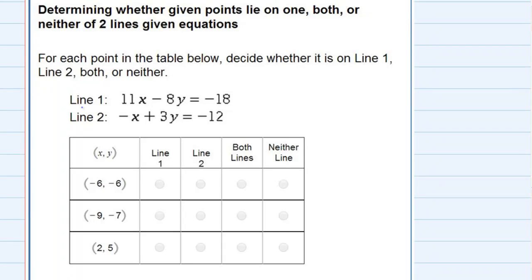Determining whether given points lie on one, both, or neither of two lines. We're given two lines, line 1 and line 2, and we're given three points, and we need to check to see which line those points lie on.